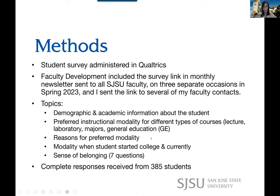We also had open-ended questions for the reasons for preferred modality, and I got a lot of the same responses as Kelly got at Cal Poly — it was very interesting to listen to her presentation. We asked what modality students were in when they started college, whether they were online or started before we moved online, and what types of classes they're currently taking. And then we included a sense of belonging component — San Jose State has a pretty extensive sense of belonging survey, and I picked out about seven questions from there.